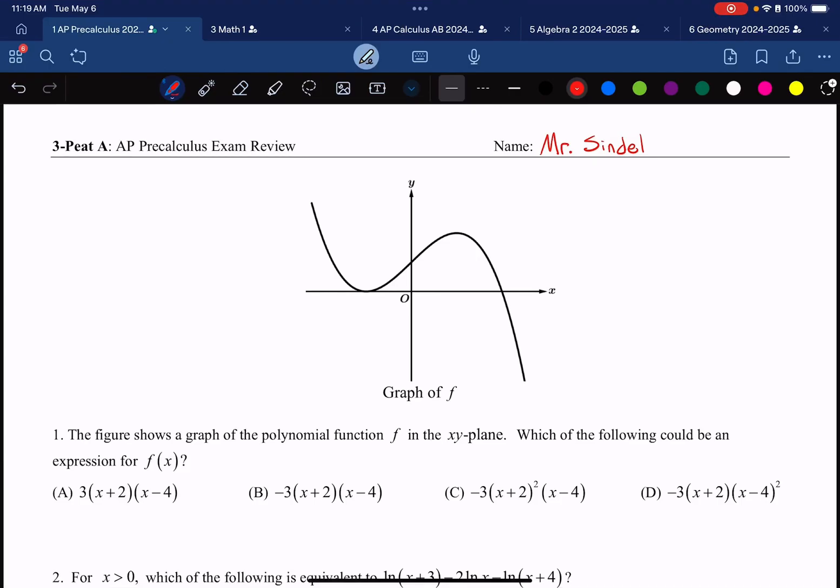This is AP Pre-Calculus. This is the 3-peat activity, which is a comprehensive review. There are going to be three questions, one for each unit.